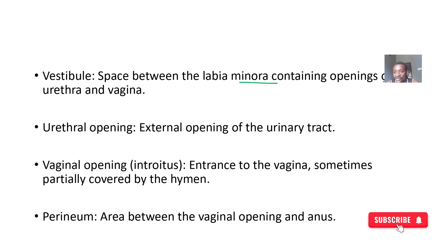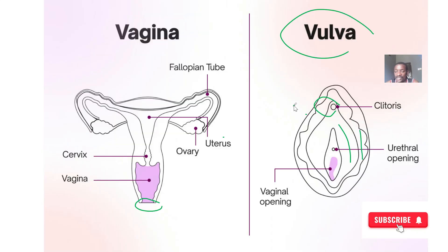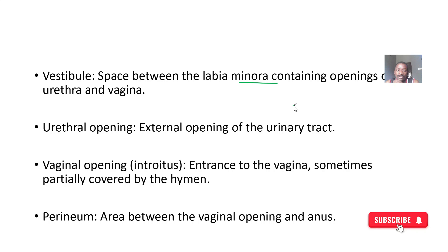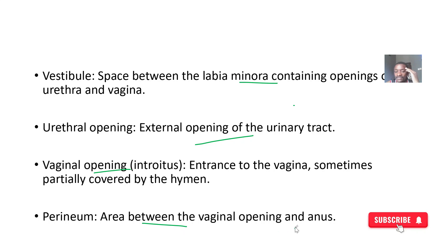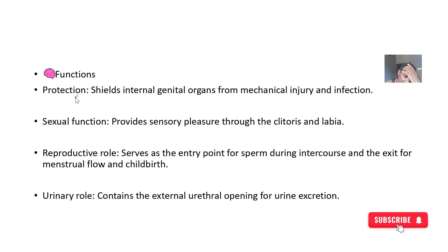We also have the vestibule, which is the space between the labia minora, containing the openings of the urethra and the vagina. The urethral opening is where the urinary system opens for urination, and the vaginal opening is known as the introitus. Then we have the perineum, which is the area between the vagina and the anus.